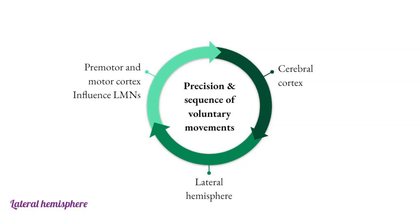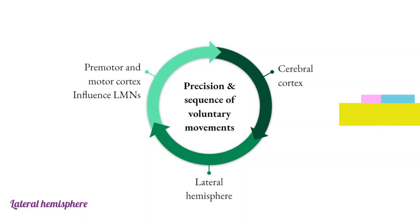The lateral hemispheres control especially the precision and sequence of voluntary movements. Hence, hemispheric cerebellar lesions cause an intention tremor that is seen when voluntary movements are performed. Due to involvement of the lateral descending motor pathways, a number of dysfunctions such as limb dysmetria, dysdiadochokinesia, and scanning dysarthria may occur.